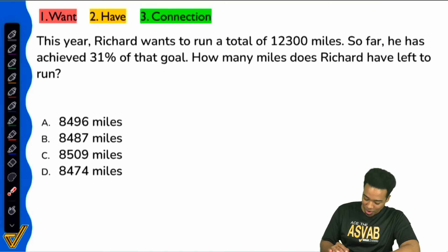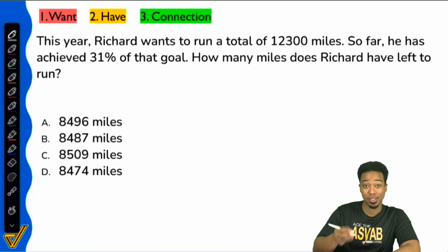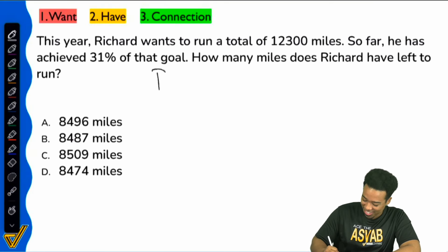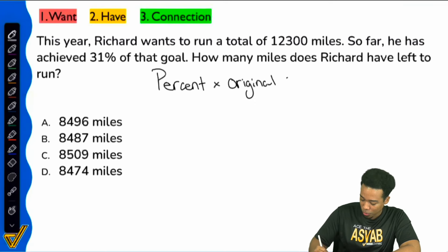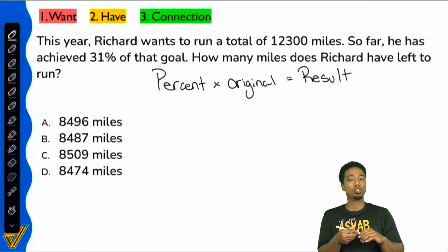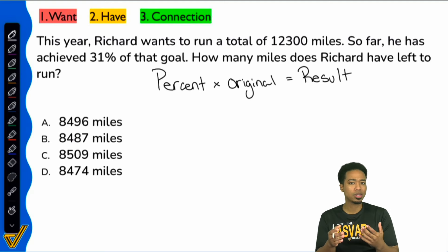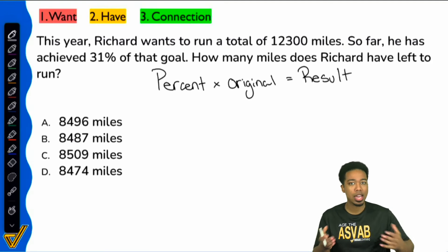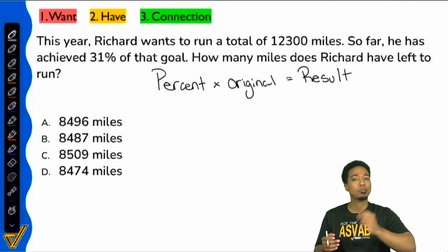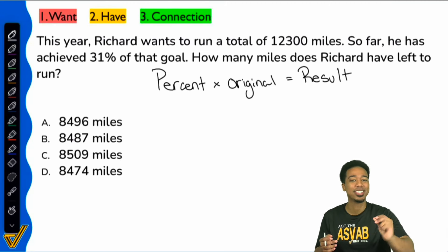So here we go — I'm going to write that formula out, and please feel free to write it down yourself. It's going to be: percent multiplied by the original equals the result. Make sure to have that written down, because it's not just about having this formula memorized — it's actually understanding how it works. Pay very close attention to the words coming out of my mouth.